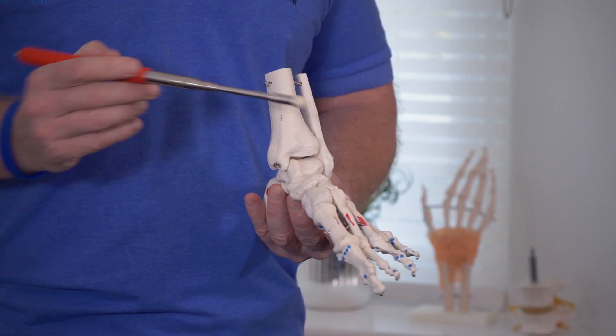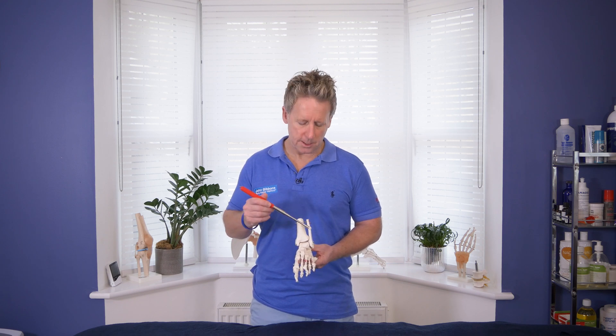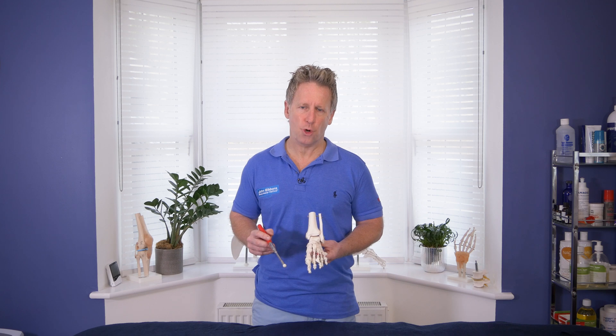The tibia is mainly the weight-bearing bone, and then around 15% is taken from the fibula in terms of weight bearing, but the majority is coming from the tibia.